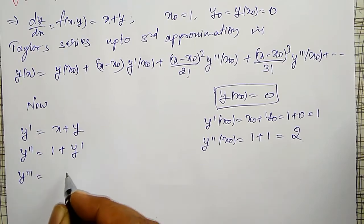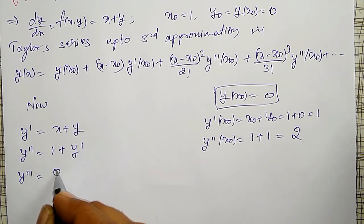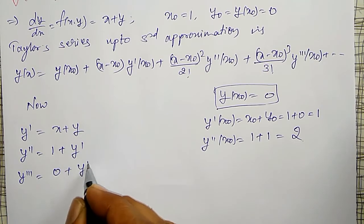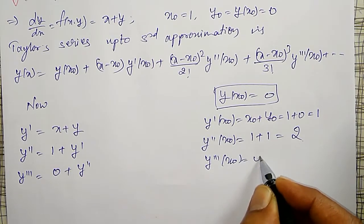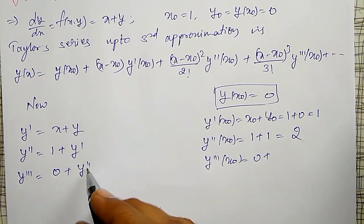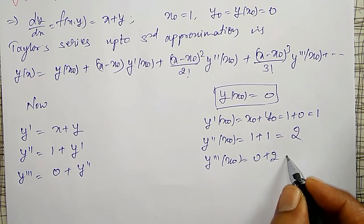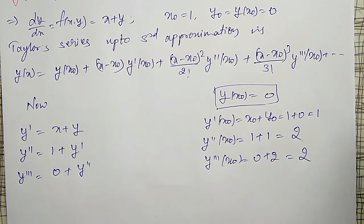Next, y''' = differential of this is 0, y' differential is y'', therefore y'''(x₀) is 0 + y''(0) is 2, therefore it is also 2.